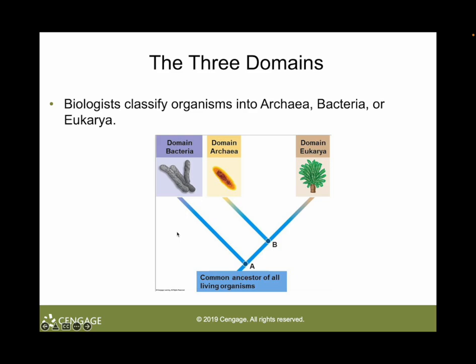We now have three domains of life. Based on fundamental molecular differences among bacteria, archaea, and eukaryotes, biologists currently classify organisms into three domains: Archaea, Bacteria, and Eukarya. New data suggests that many core genes of eukaryotes came from archaea, supporting the hypothesis that an archaean was the host cell of the endosymbiosis that led to the evolution of eukaryotes. The hypothesized partnership between archaea and bacteria suggests that all life can be classified into a two-domain system with eukaryotes being a subgroup.